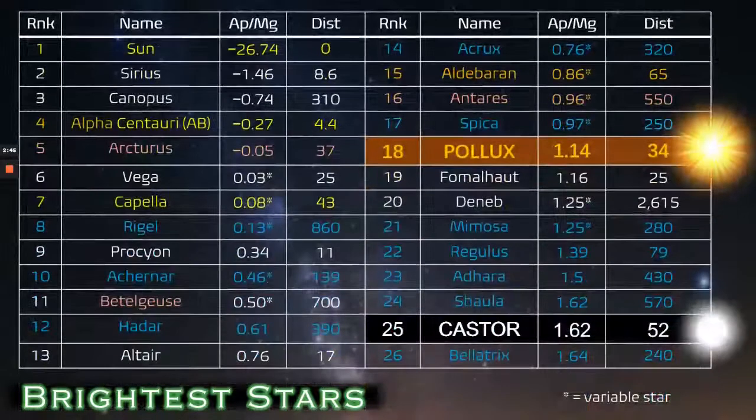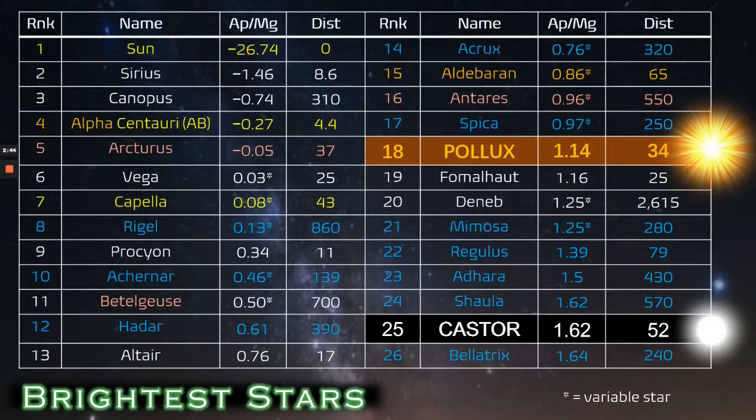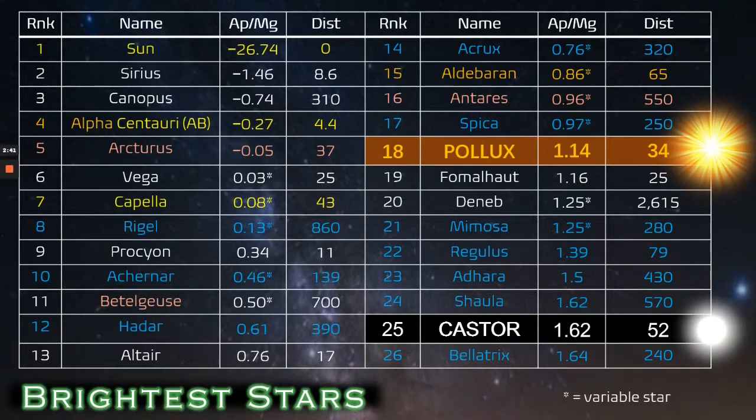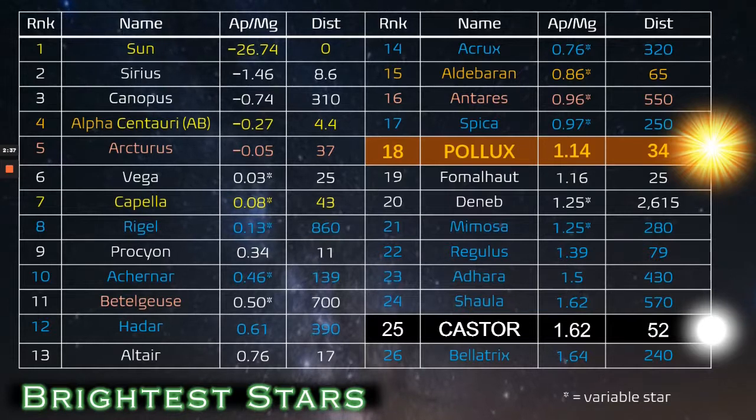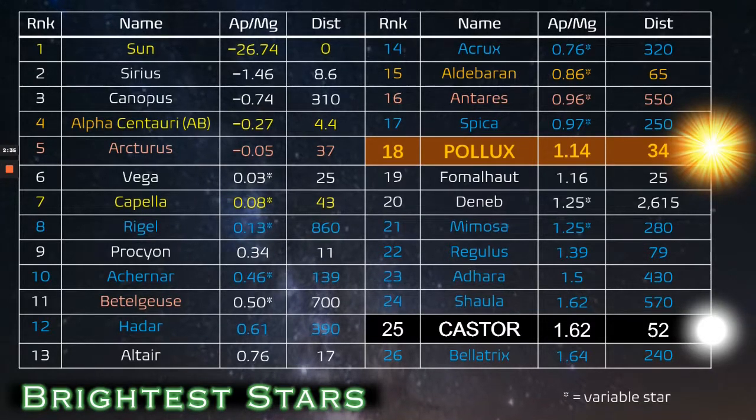So you might wonder then where do Pollux and Castor rank on the brightest stars in the sky? So here we can see Pollux comes in at 18 with apparent magnitude of 1.14. Castor actually is as low as 25 and at 1.6 apparent magnitude.